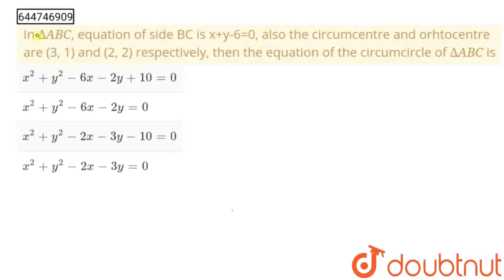Hello students. The question is: In triangle ABC, equation of side BC is x+y-6=0, and also circumcenter and orthocenter are these two points respectively. Then equation of circumcircle of triangle ABC is? And these are our four options. We have to say which of the following option is correct.